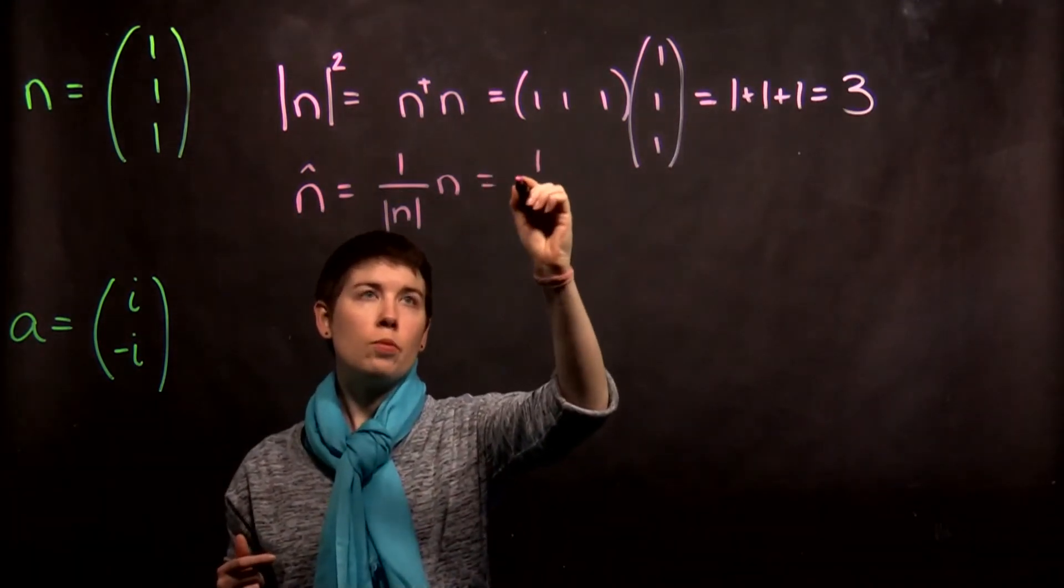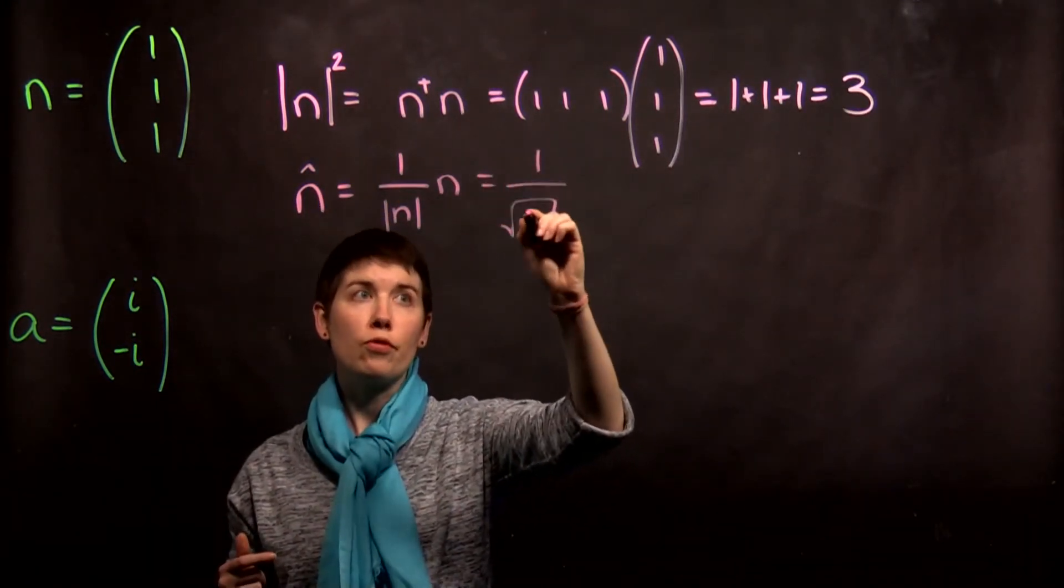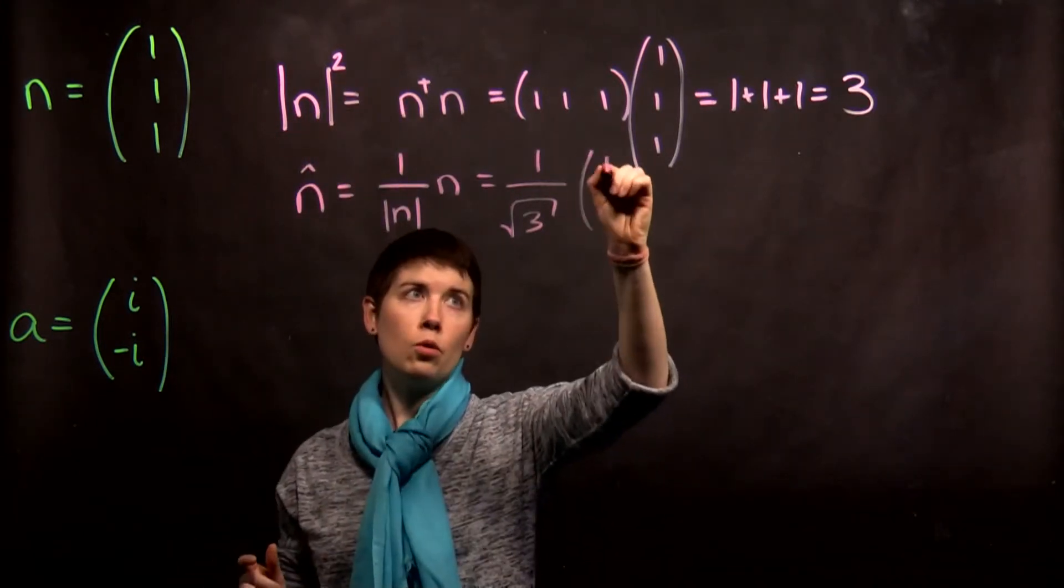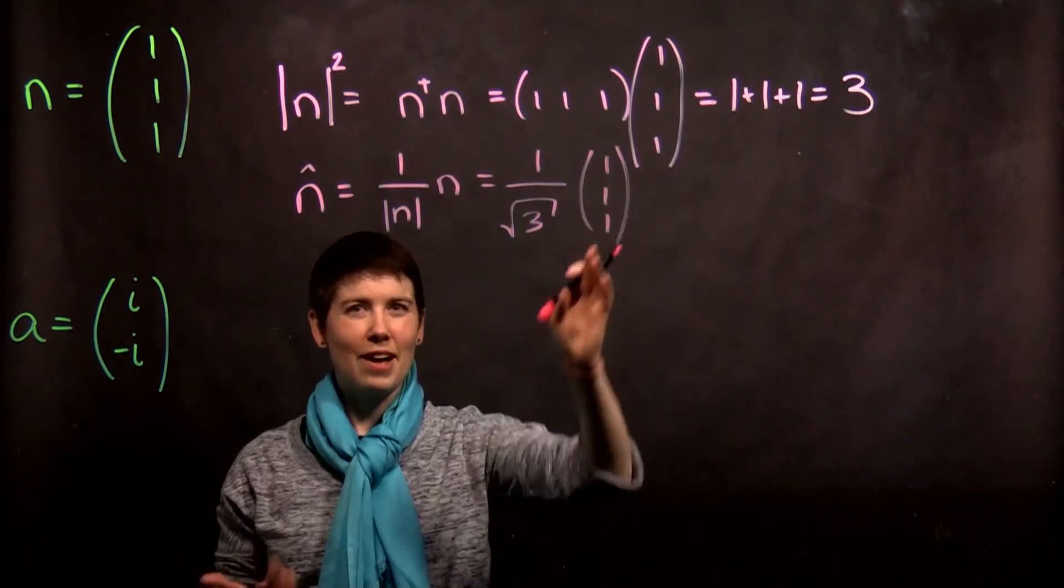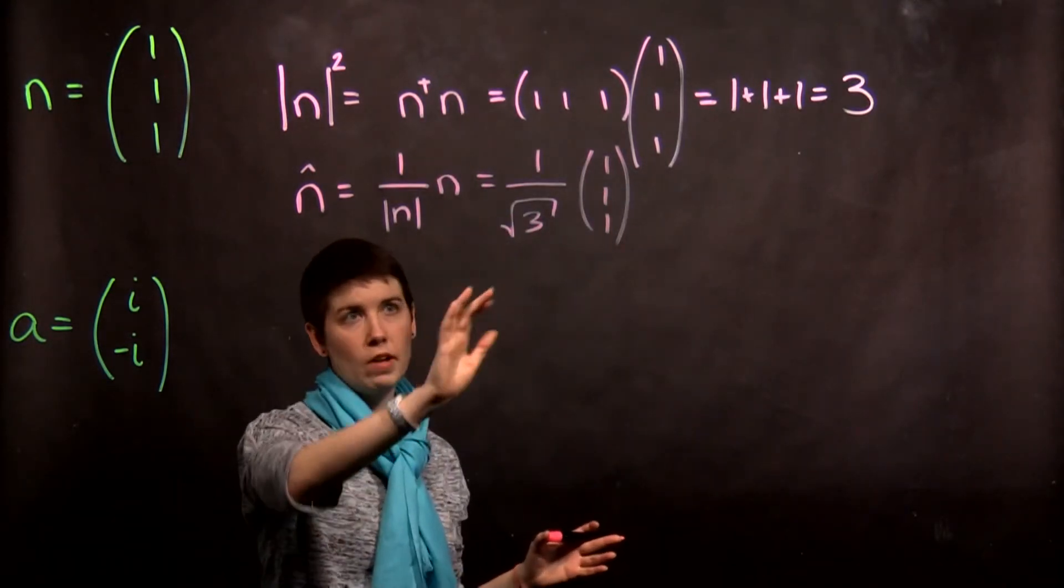So, in this case, this is going to be one over the square root of three, because the magnitude squared was three, times one, one, one. Some people like distributing this inside, but in general, it's better in quantum mechanics to leave it outside.